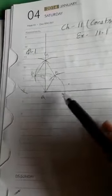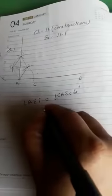So angle AEF is equal to angle CAE, equal to 60 degrees. It means EF is parallel to AC because these two angles are alternate interior angles. So EF is parallel to AC.